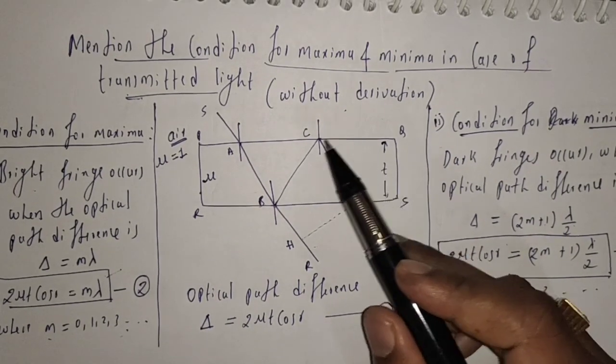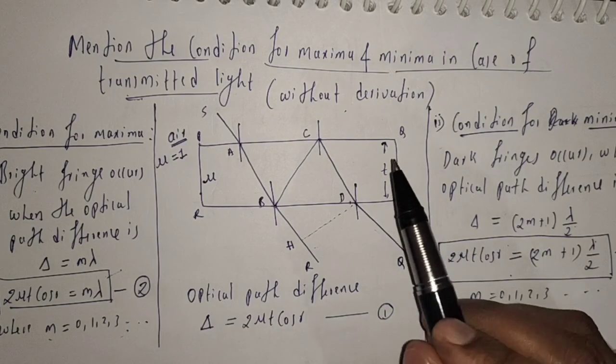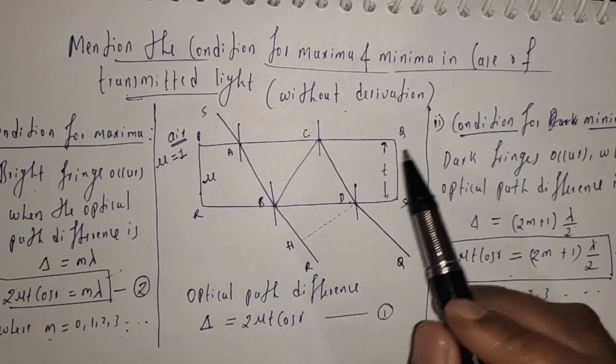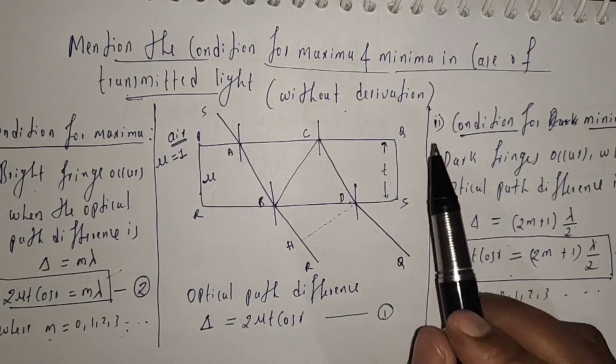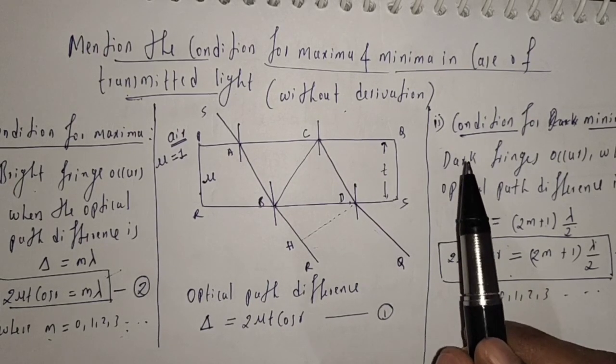We already derived the optical path difference equation in the case of reflected light, and for transmitted light the optical path difference value is the same. That's why we directly take the optical path difference value. From Young's double slit experiment, the path difference for a bright fringe is delta equals m lambda, and for a dark fringe delta equals (2m + 1) lambda by 2. Substituting gives us the condition for maxima and condition for minima. This is all about the condition for maxima and minima in the case of transmitted light.